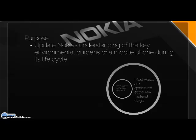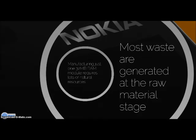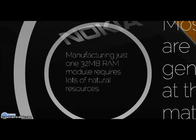LCA's purpose is to update the understanding of the key environmental burdens of a mobile phone during its life cycle. According to research by United Nations University, Tokyo, more than 90% of the waste in the life cycle of a mobile phone is generated at the raw material stage. Manufacturing just one 32 megabyte RAM module requires 32 kilograms of water, 1.6 kilograms of fossil fuels, 700 grams of gases, and up to 72 grams of different chemicals. Thus, product life cycle analysis is vital for the sake of our environment and future.